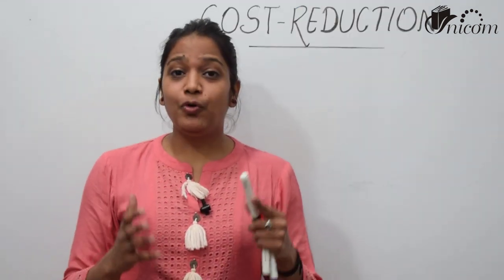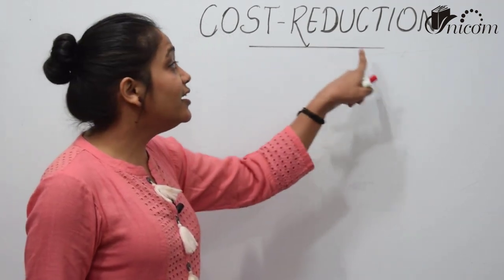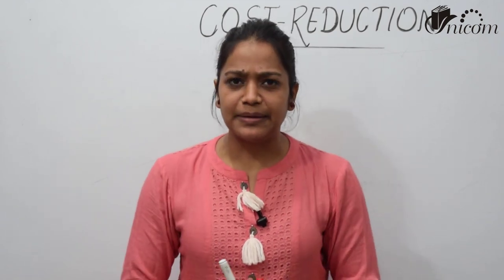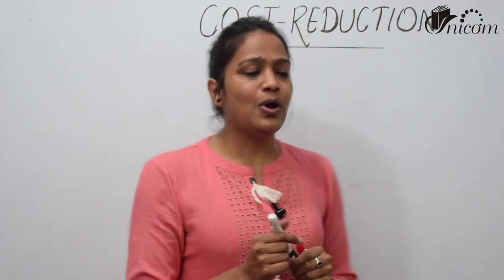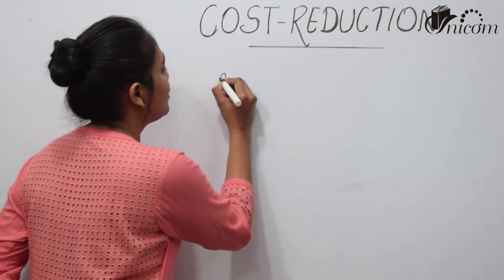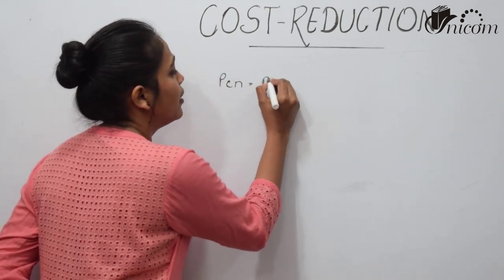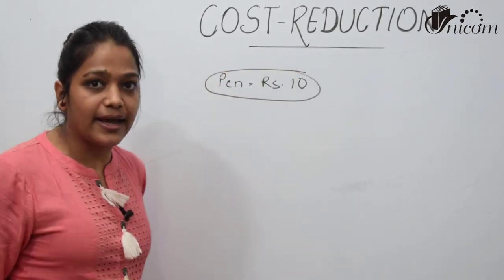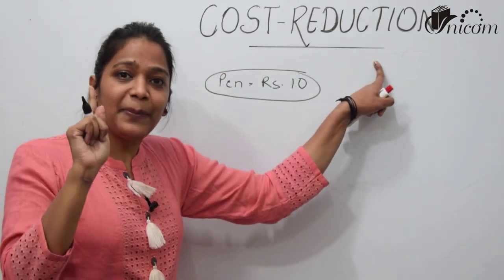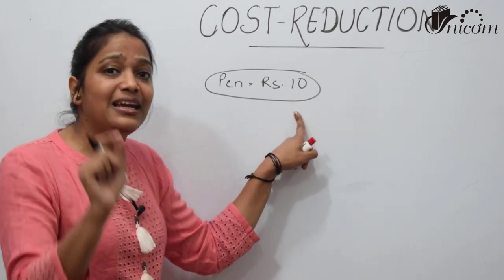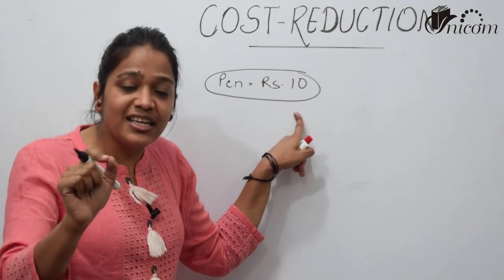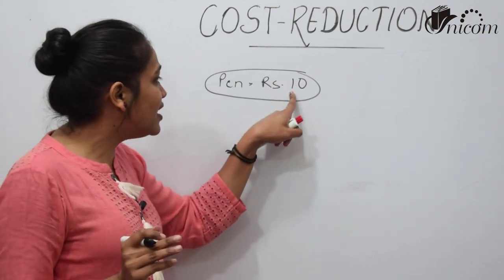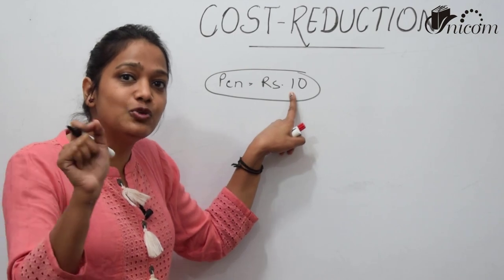Now, what is cost reduction? Cost you know. Reduction means to reduce. It is a little easier to understand. For example, if you have pen production and the cost is 10 rupees per unit, the first rule of cost reduction is that there is no such thing as a least cost — meaning there is no cost that cannot be reduced further. So don't think that if the cost is already 10 rupees, it cannot be reduced.